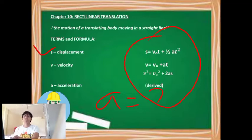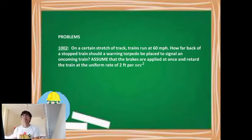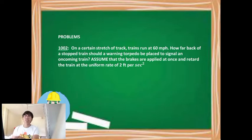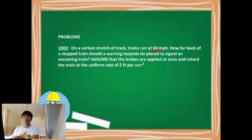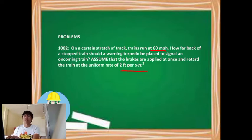Our first sample problem: on a certain stretch of track, trains run at 60 miles per hour. How far back of a stopped train should a warning torpedo be placed to signal an oncoming train? Assume that the brakes are applied at once and retard the train at a uniform rate of 2 feet per second squared. Given: initial velocity equals 60 miles per hour. Since the brakes are applied to stop the train, we will use negative 2 feet per second squared for acceleration.